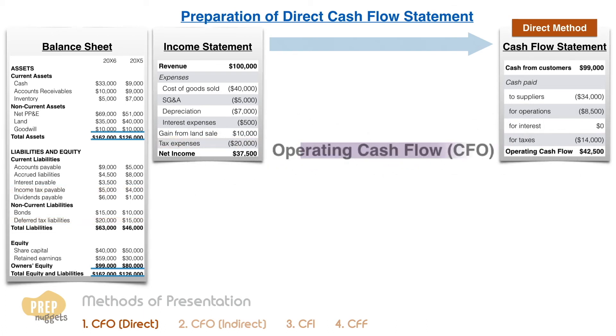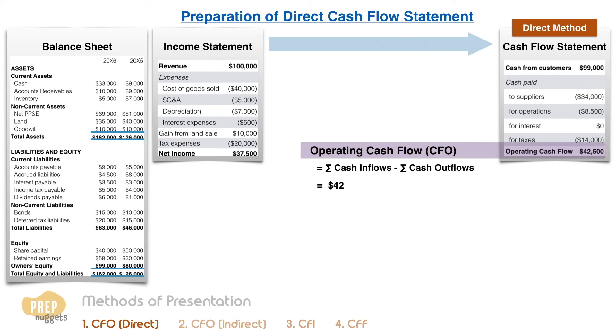Summing up all the cash inflows and cash outflows for the period, we get a total operating cash flow, or CFO, of $42,500.